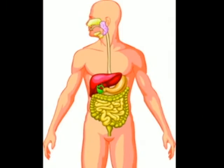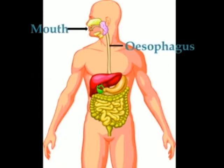The various organs of the human digestive system are: mouth, esophagus — through which the food passes into the stomach — and the stomach, which is a broad bag-like structure.